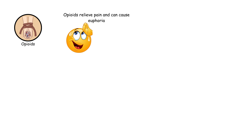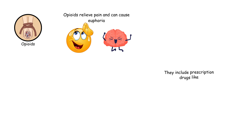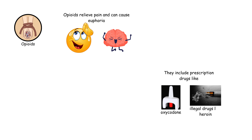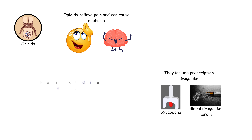Opioids relieve pain and can cause euphoria. They include prescription drugs like oxycodone and illegal substances like heroin. They have a high risk of addiction and overdose.